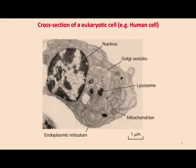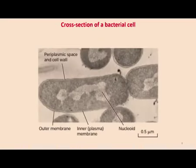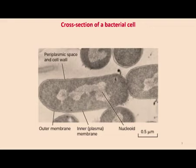Another important thing to notice is the size of these cells. The typical diameter of a eukaryotic cell would be around 10 micrometers — the scale bar shown is 1 micrometer and you can appreciate the size. A prokaryotic cell, by comparison, would be somewhere around 3 micrometers.